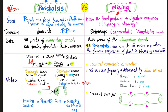Peristalsis, also known as propulsive movement, propels the food forwards and spreads the chyme along the mucosa. Mixing movements mix the food particles with digestive enzymes — these segmental movements shear and chop the food. Direction: propulsive is moving forwards, from proximal to distal, from oral to anal. Mixing movements are segmental — back and forth, sideways, or up and down. These are constrictive, segmental movements.